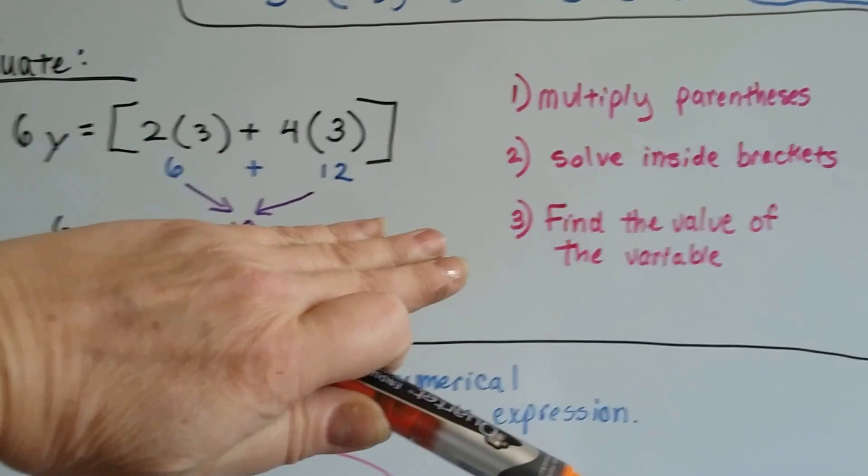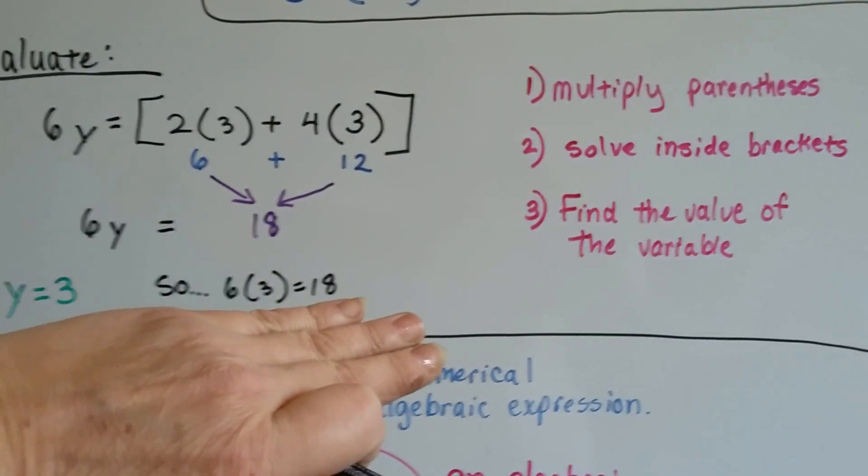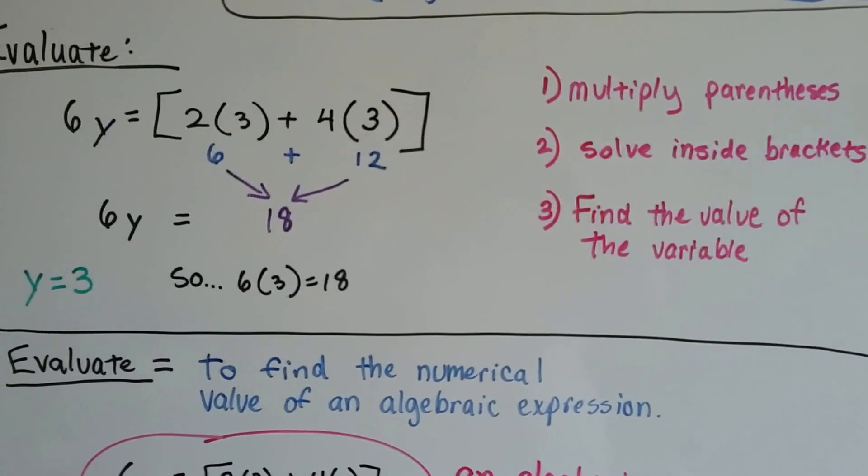It says to add them together. 6 plus 12 is 18. 6y equals 18. Oh, come on, that's so easy. 6 times 3 is 18. Y equals 3. Wasn't that easy?